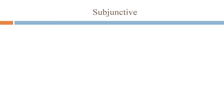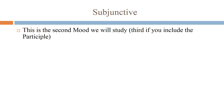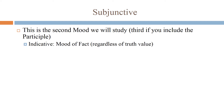Let's start with the subjunctive mood. This is the second mood we will study, the indicative being the first. It would be the third if you include the participle, but the participle is not really a mood — we put it in the mood category because we had nothing else to do with it. The indicative is the mood of fact, regardless of truth value, while the subjunctive is the mood of probability or possibility.